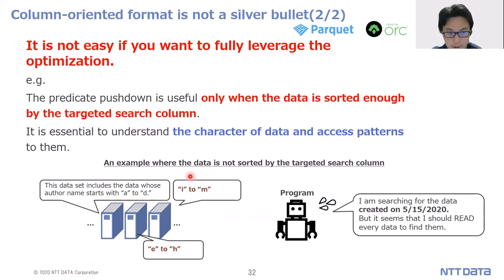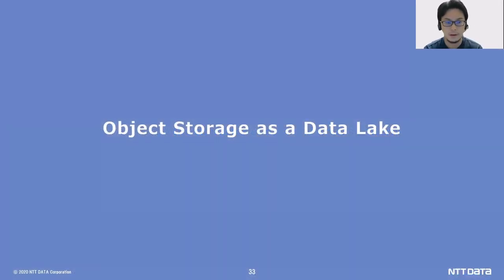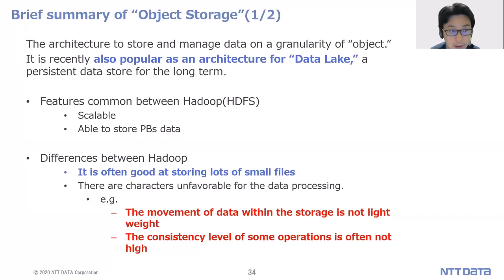This is an example where data is not sorted by the targeted search column. In this dataset the data is sorted alphabetically. If you want to search data created on a certain date, you cannot use the metadata and must read the full dataset. Then, the next topic is object storage as a data lake. Object storage is one architecture to store and manage data at the granularity of objects, and it is recently popular as an architecture for a data lake — a persistent data store for the long term.